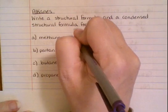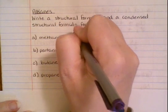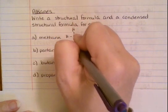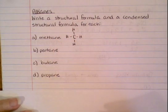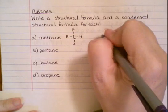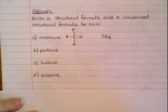So methane means that there is just one carbon. Remember, each carbon has four bonds. Now, if we want to write this in a condensed form, we just put everything together, so we get CH4.